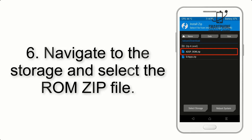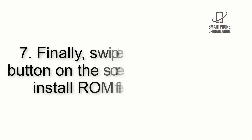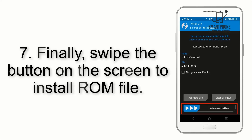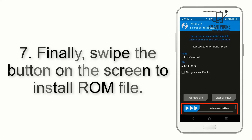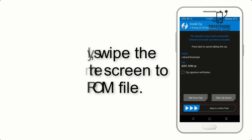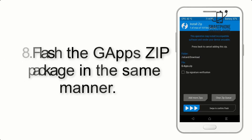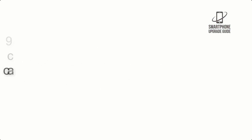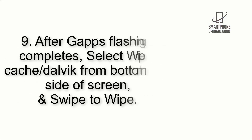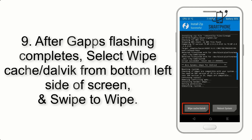Step 5: Go back to the recovery main screen and tap on the Install button. Step 6: Navigate to the storage and select the ROM zip file. Step 7: Swipe the button on the screen to install the ROM file. Step 8: Flash the GApps zip package in the same manner.